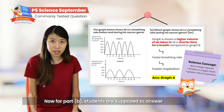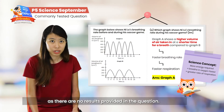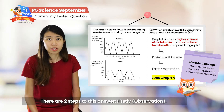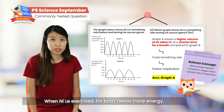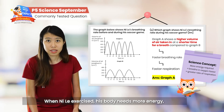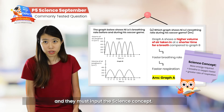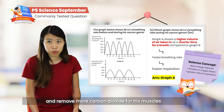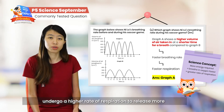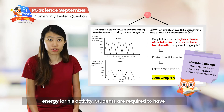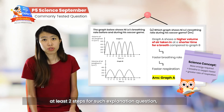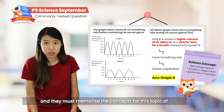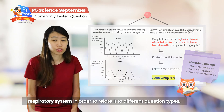For Part B, students are supposed to answer based on the explanation answering technique. Since there are no results provided in the question, there are two steps to this answer. Firstly, observation — when this person exercises, his body needed more energy. Then they have to input the science concept: he breathed faster and deeper to take in more oxygen and remove more carbon dioxide, for his muscles to undergo a higher rate of respiration to release more energy. Students are required to have these two steps for such explanation questions, and they have to memorize the concepts for the respiratory system topic in order to relate them to different question types.